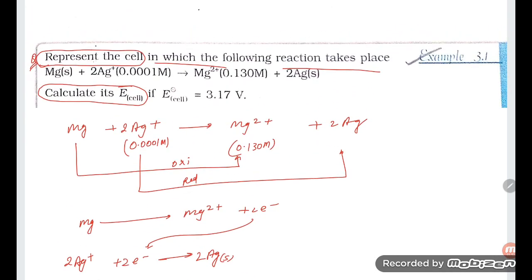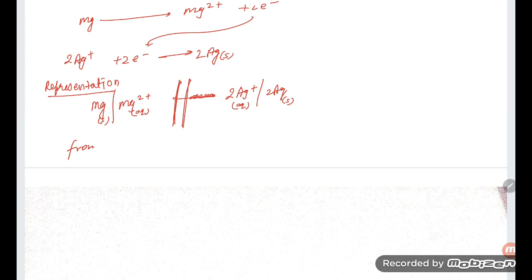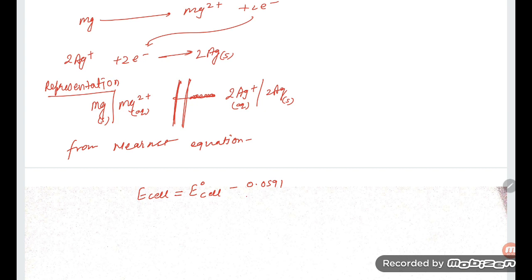Now, in this question E°_cell is given and E_cell is being asked. From the Nernst equation: E_cell = E°_cell − (0.0591 / n) × log([oxidation product] / [reduction reactant]).